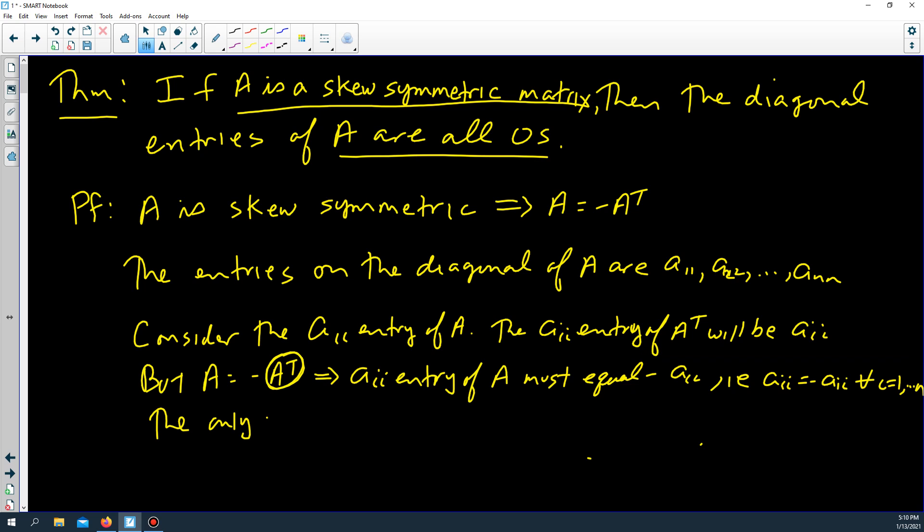The only way AII, a real number, is equal to negative itself is if AII equals zero. And this is for all I, one to N.